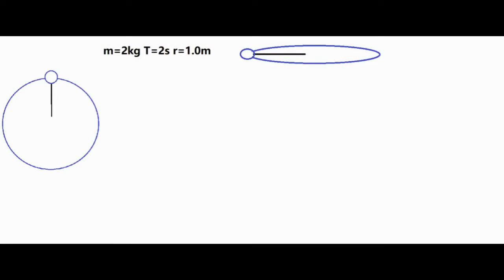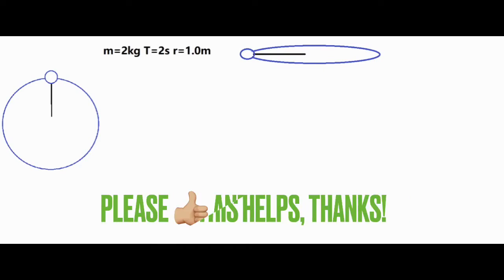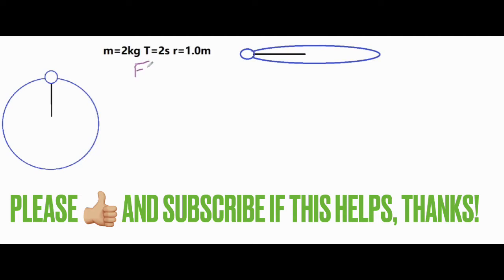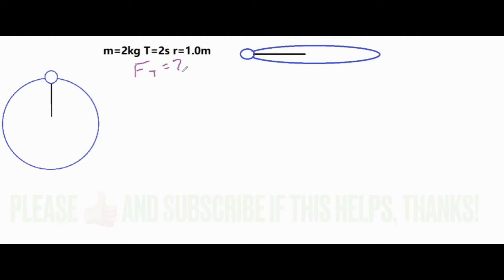In this video, we're going to be taking a look at two vertical motion problems: an object being swung in a vertical circle, and secondly, an object or a ball being swung in a horizontal circle. For our first problem, we're going to solve for the force of tension at two different locations — at the very top and also at the bottom.